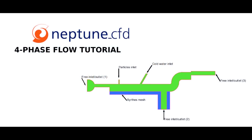Hello everyone and welcome to this four-phase flow tutorial done with Neptune CFD. The different phases are liquid water, steam, solid particles and bubbles. The solid particles will react on contact with water and form gas. There will be a conjugate heat transfer between the fluid domain in green and the solid domain in blue. The simulation will be done by coupling Neptune CFD with SIRTES.